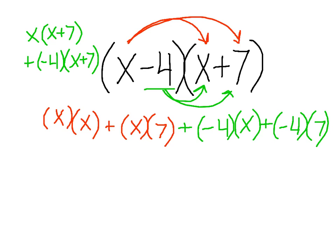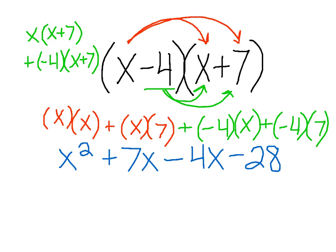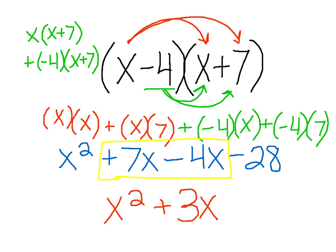If we simplify our answer: x times x is x squared, x times 7 is plus 7x, negative 4 times x is minus 4x, and negative 4 times 7 is negative 28. Notice that 7x minus 4x can be simplified — we subtract the coefficients and keep the base. So 7 minus 4 gives us plus 3x. Our final answer is x squared plus 3x minus 28.